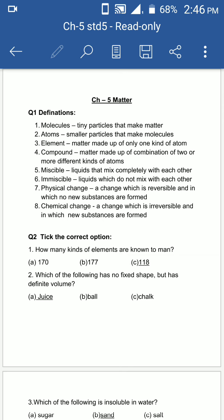Third is element - matter made up of only one kind of atom. Sirf ek hi atom se jo matter banta hai, agar koi bhi matter sirf ek type ke atom se banta hai, usko elements kehte hain.